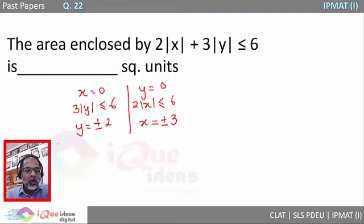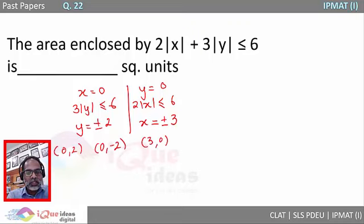So now we have got four coordinates. Either it could be (0, 2) or (0, -2) or (3, 0) or (-3, 0).